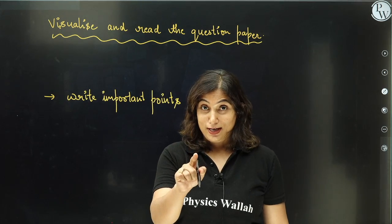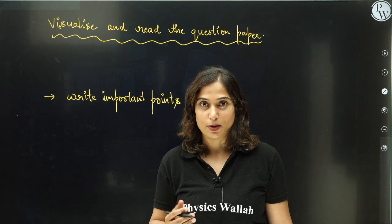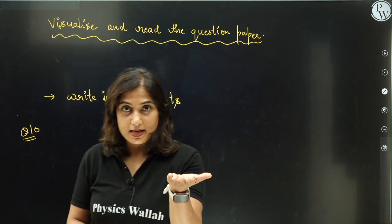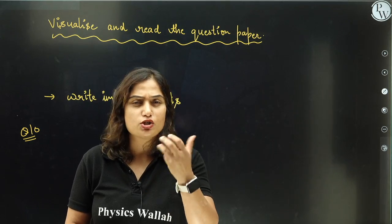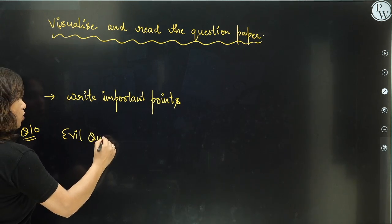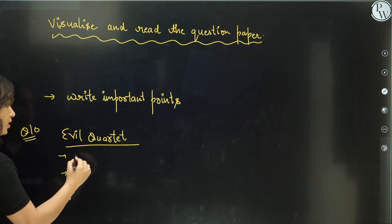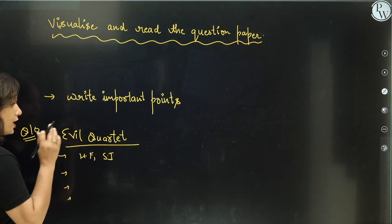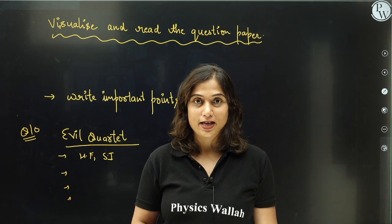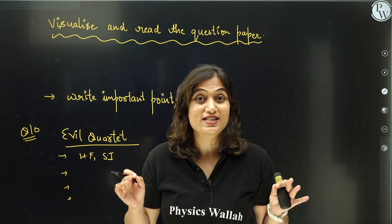This next tip my husband shared with me from his board exams: before starting the question paper, write important key points on the rough sheet at the back. For instance, if you have chosen question number 10 and the question is about the evil quartet, jot down all the key points — habitat fragmentation, species invasion, and so on. Write the key points in front of every question so that when you start writing answers, you have all the key points in mind and just need to extend them.